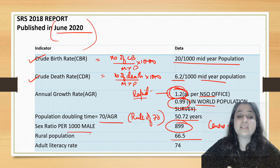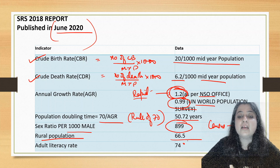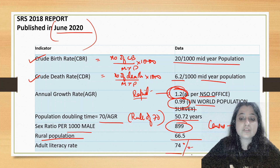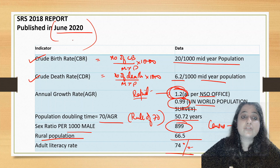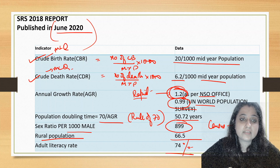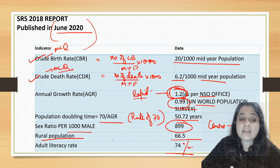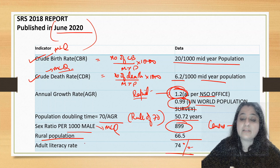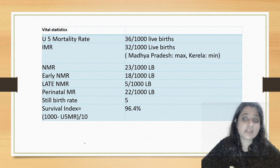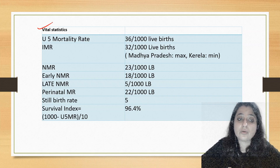66.5% of the population still resides in rural areas. The total literacy rate is 74%. These are all important MCQ points — crude birth rate, crude death rate, and the current sex ratio can all be asked in exams.